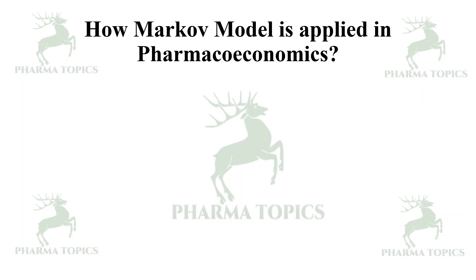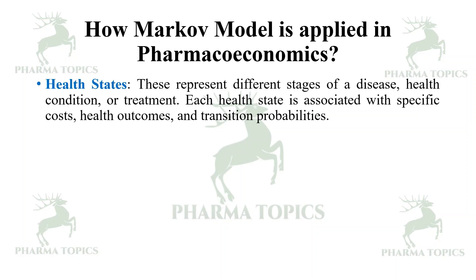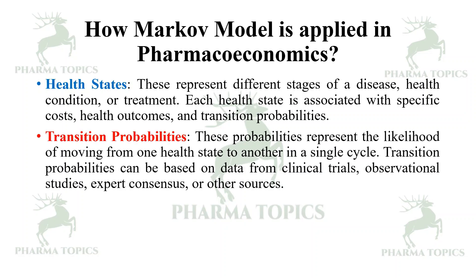How is Markov modeling applied? First, identify the health states — these represent the different stages of a disease, health condition, or treatment; each health state is associated with specific costs, health outcomes, and transition probabilities. Then define transition probabilities — these represent the likelihood of moving from one health state to another in a single cycle, and can be based on data from clinical trials, observational studies, expert consensus, or other sources.